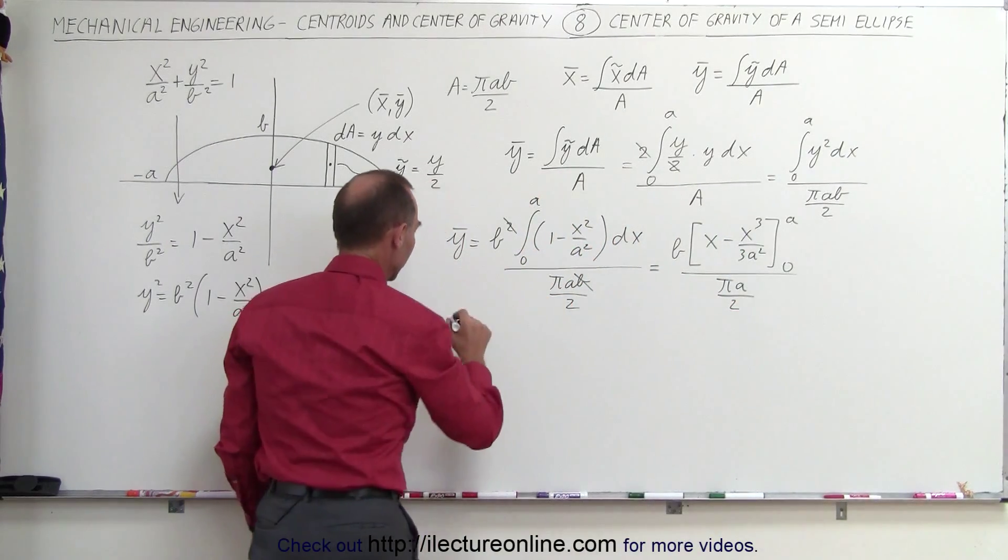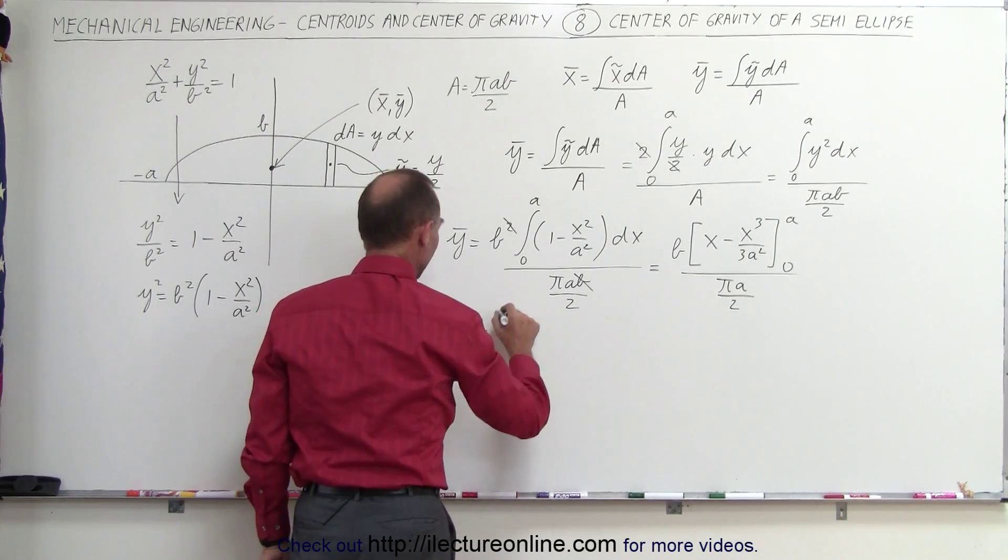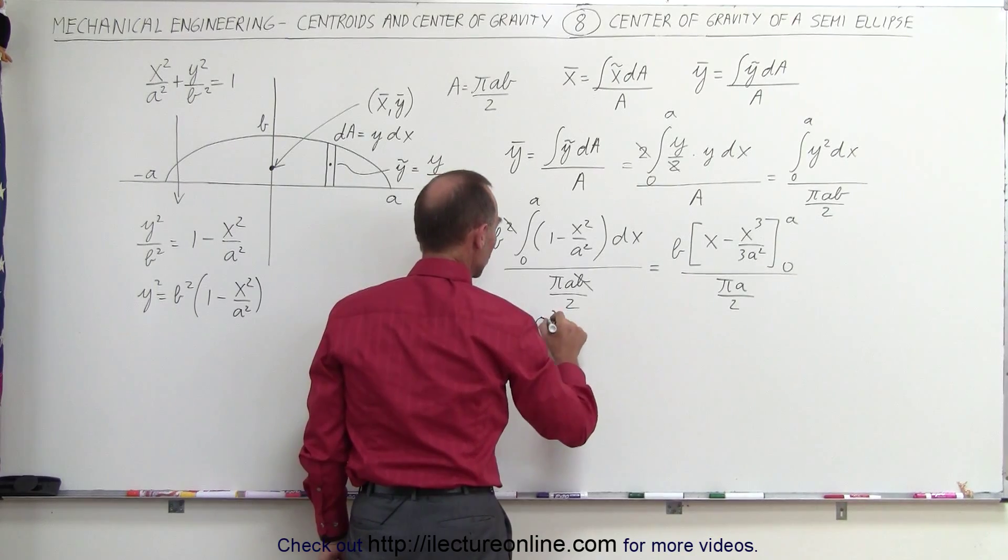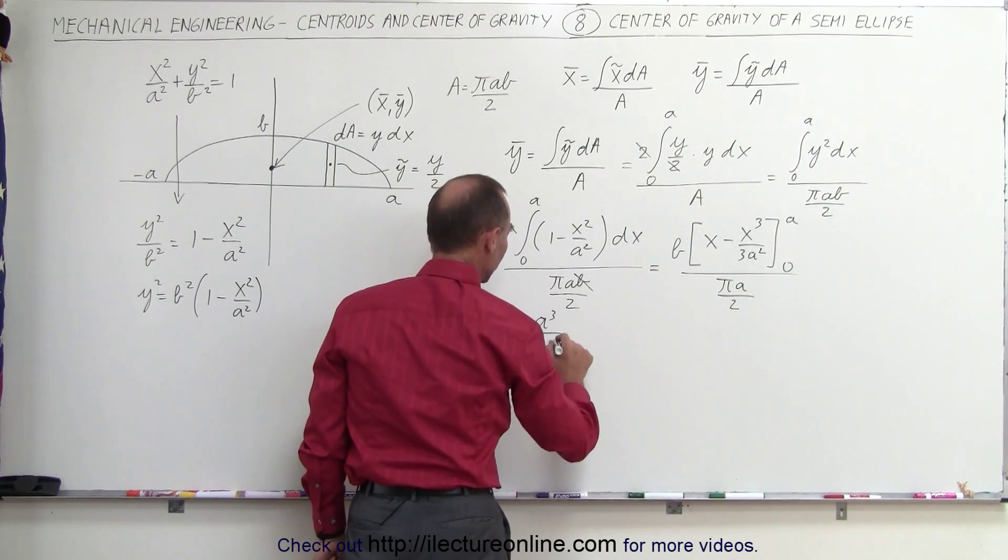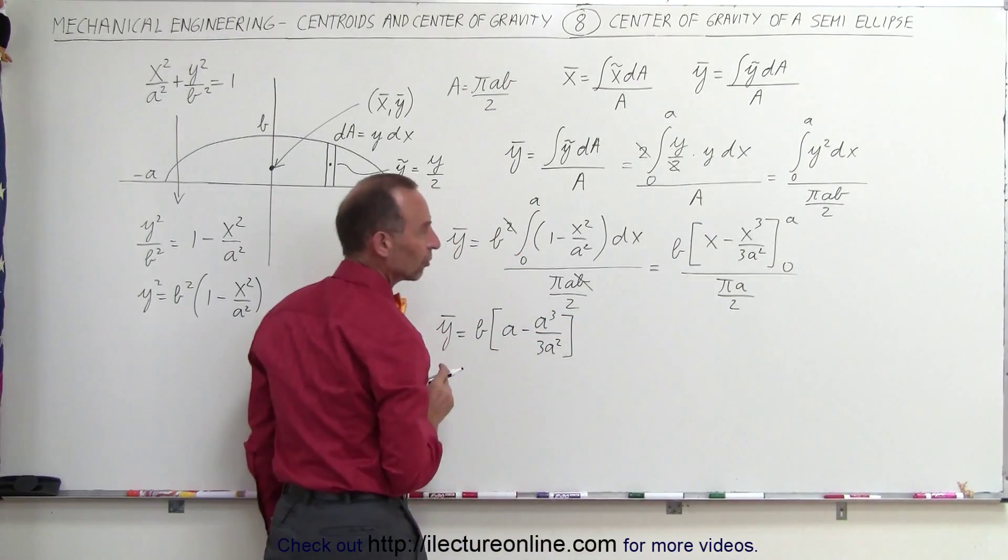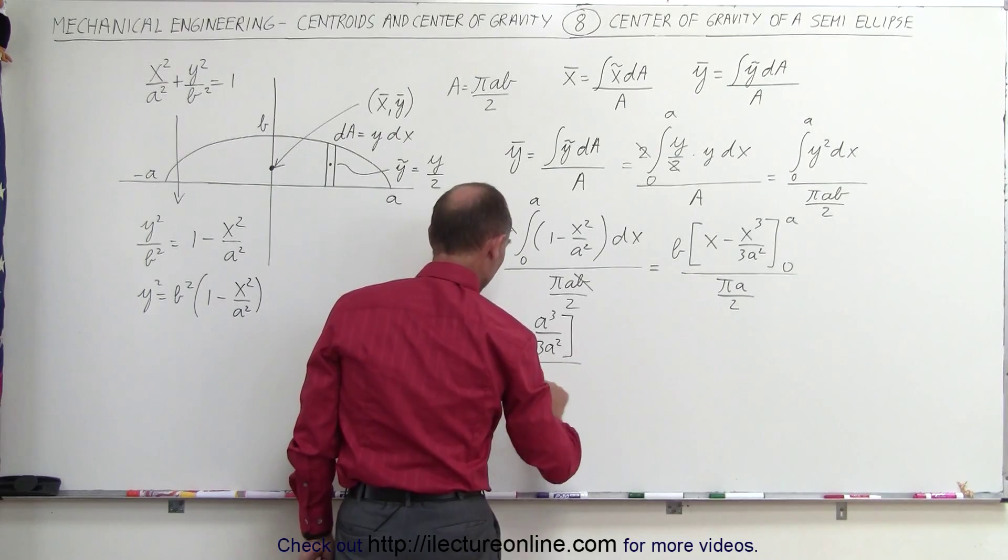We'll plug in the upper limit. So we have the y-coordinate of the center of gravity is equal to b times, when we plug in the upper limit, we get A minus A³ divided by 3a². We don't have to plug in the lower limit because we'll get 0, and the whole thing divided by πA divided by 2.